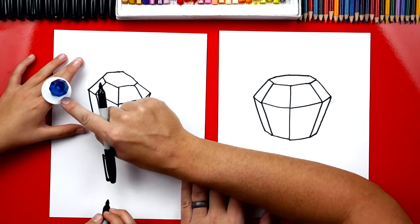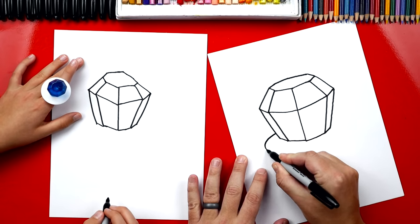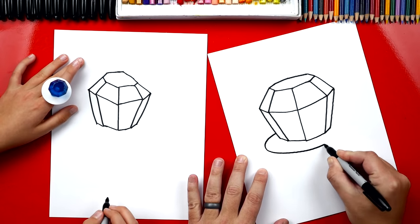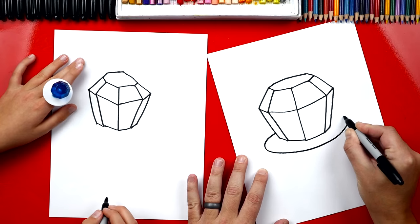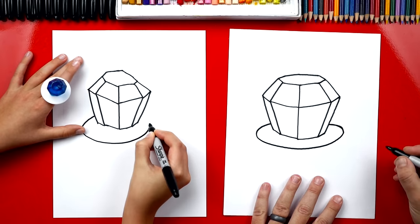Now we're gonna draw this bottom part. So, the disc that goes around our gem. So, we're gonna start here, come out, around, and then back in.